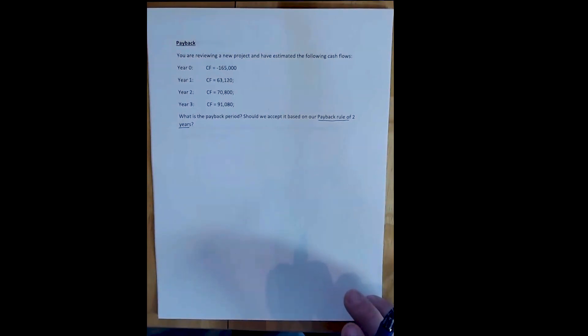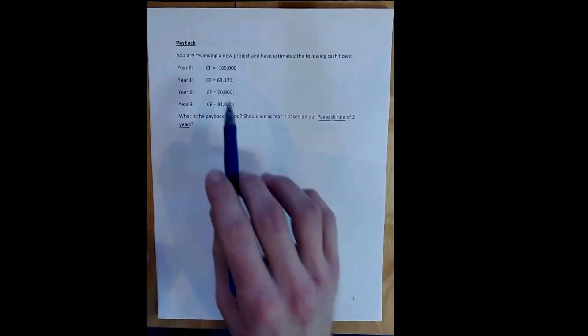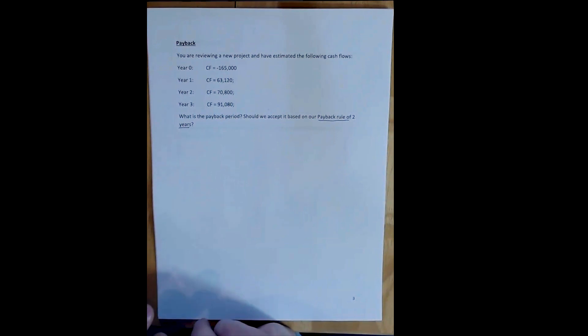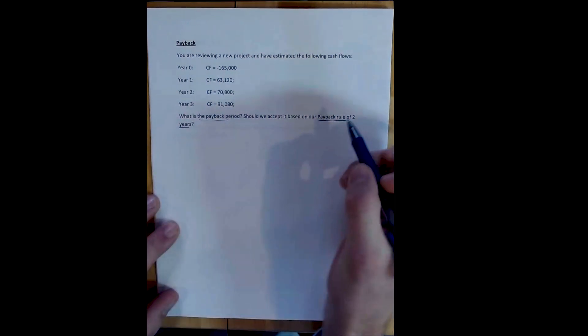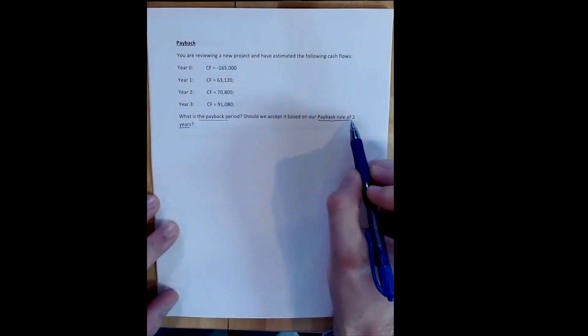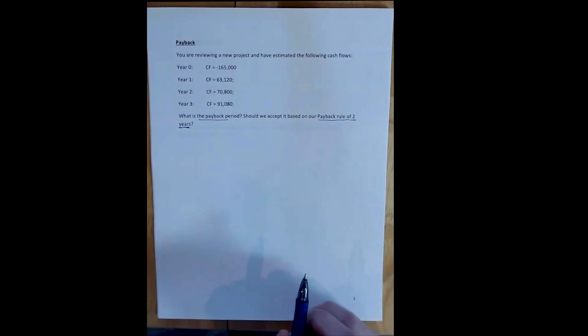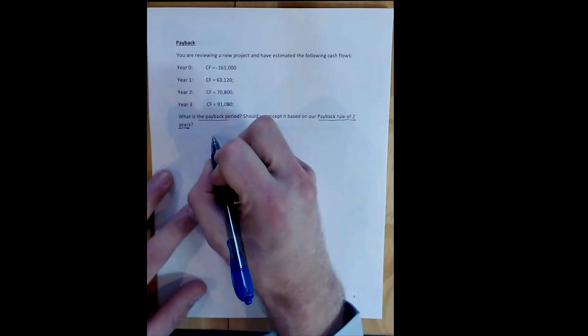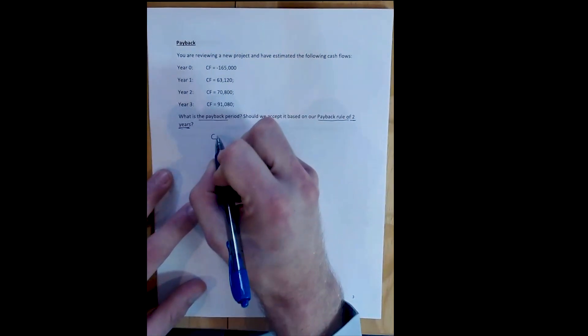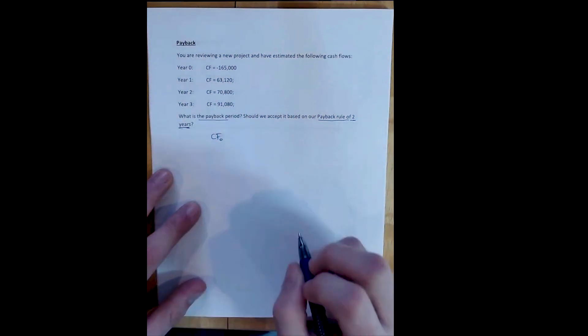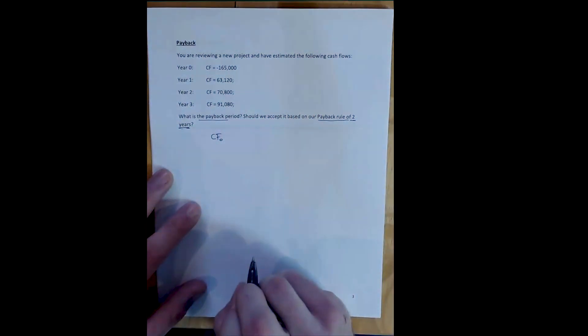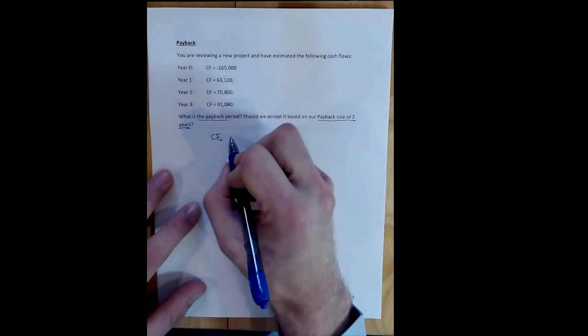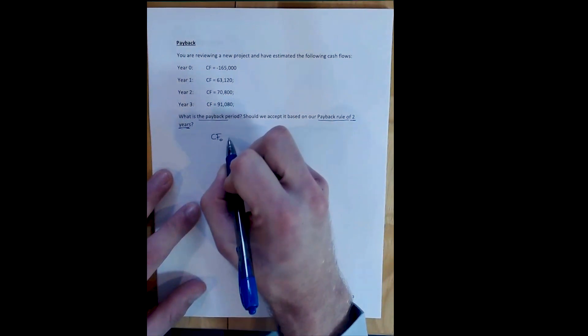Here's our project - the same one we worked before. It has an initial cost of $165,000 and three years of positive cash flows. We want to know what's the payback period, and then based on our rule (we require projects to pay back in two years), do we accept the project? I start off by writing it down because I like to see it. I think this makes it easier. Start by writing a vertical timeline where the initial cost is written up top.